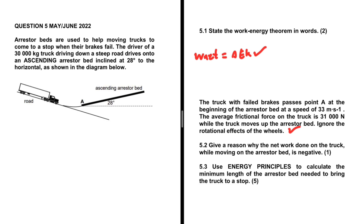For question 5.2 — why is the net work done on the object while moving on the arrestor bed negative? When the object is moving up the arrestor bed, the forces acting on it are: the weight, resolved into its perpendicular and parallel components, the normal force, and the frictional force. The displacement of the object is up the incline since the truck is ascending. From this, we can see that F-net is in the opposite direction of the displacement, so the work done should be negative.